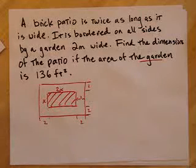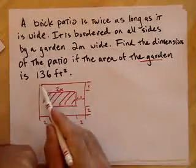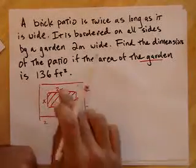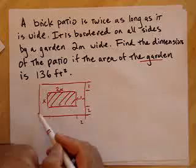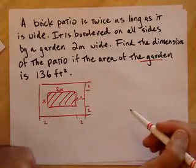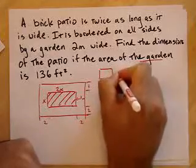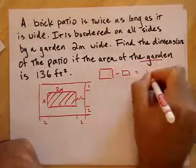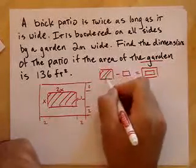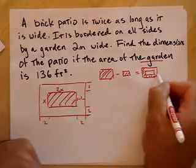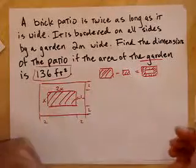And it's bordered by a garden that's two meters wide. Okay, so I'm going to draw a garden around it. And this distance right here is 2. All around, right? That's 2. And this part right here is 2. This right here is 2. And this part right here is 2, right? Alright, so I'm trying to figure this thing out. They gave me some information. They gave me the area of the garden.